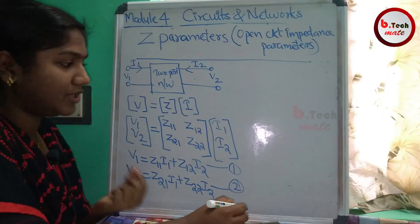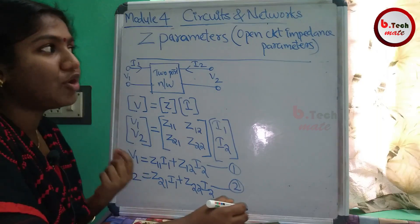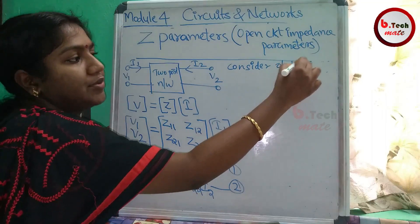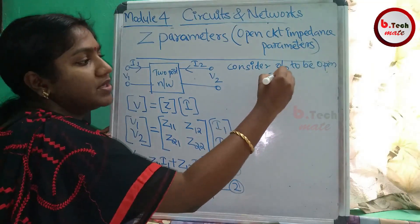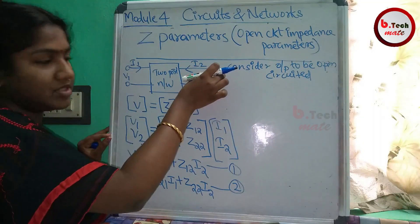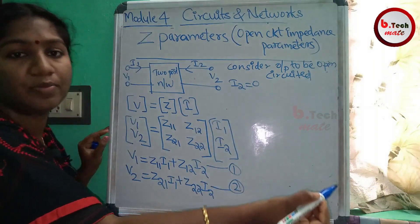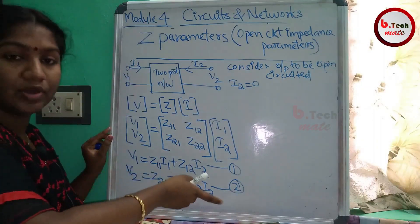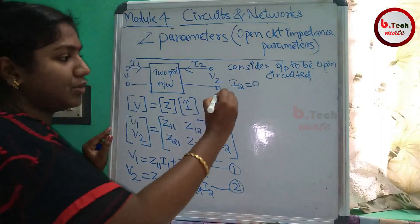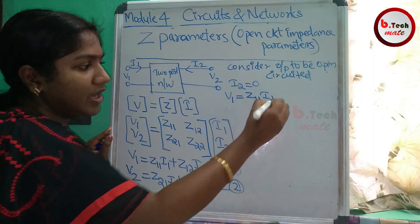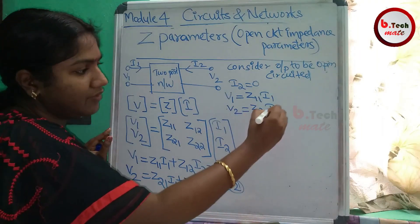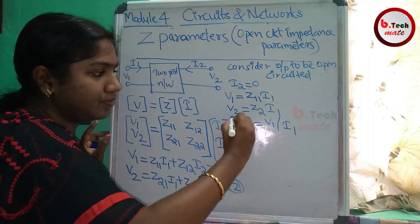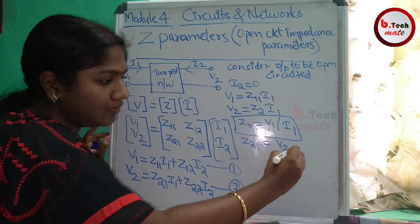First, consider the output side to be open circuit. When the output is open circuit, there is no current flowing, so I2 equals 0. Substituting I2 = 0 into the equations: V1 equals Z11·I1 and V2 equals Z21·I1. Therefore, Z11 equals V1 divided by I1, and Z21 equals V2 divided by I1.